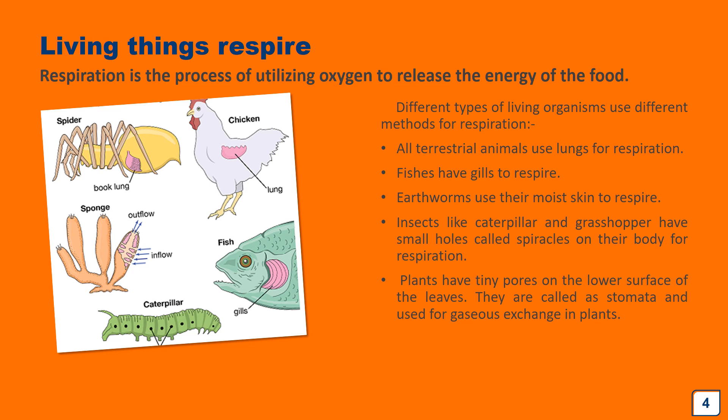Terrestrial animals — land-dwelling animals — have lungs for respiration. Aquatic animals like fishes have gills. The earthworm uses its moist skin to respire. Insects like the caterpillar have small hole-like structures on their body called spiracles, which help them respire. You can see the pictures: the chicken is shown with lungs because it is a terrestrial animal, and we also have lungs because we are terrestrial animals.